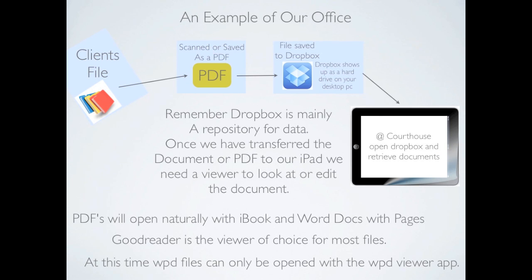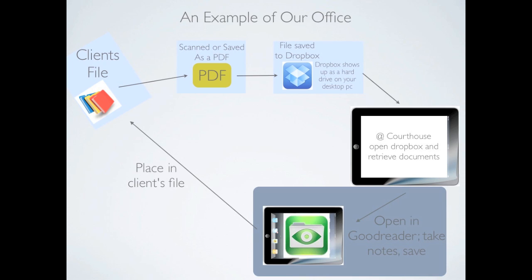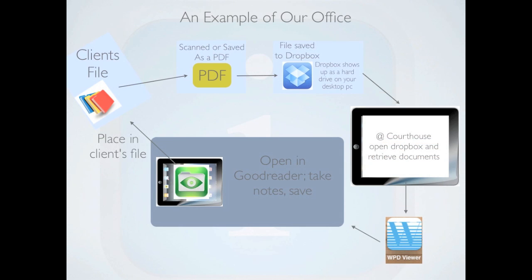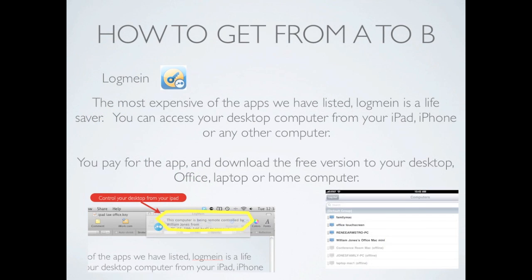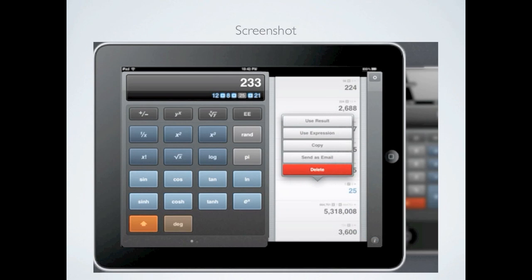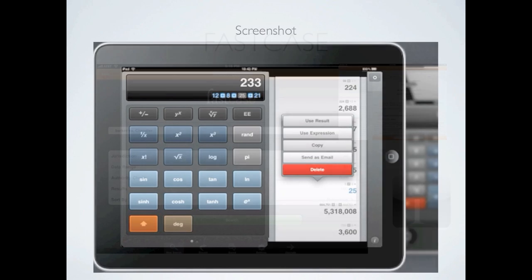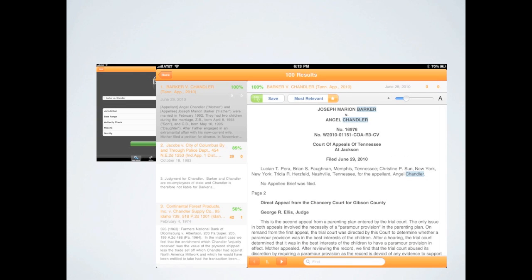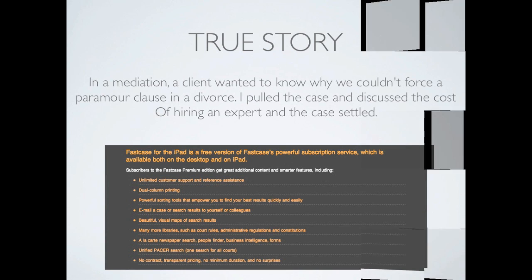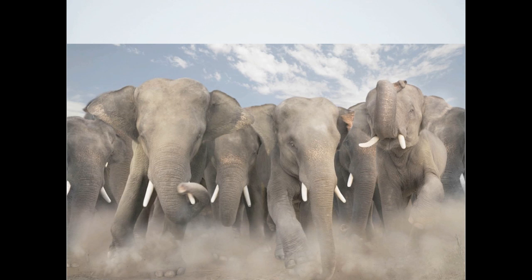In part two, we started looking at GoodReader and how we used it in our office, and how it integrated with the WordPerfect viewer. We then looked at LogMeIn and how to control your desktop from your iPad. After that, we looked at Square — how to get paid using your iPad — and then CalcBot, a handy-dandy calculator. Next, we looked at FastCase, which is like having case law research on your iPad. That brings us to the beginning of part three.